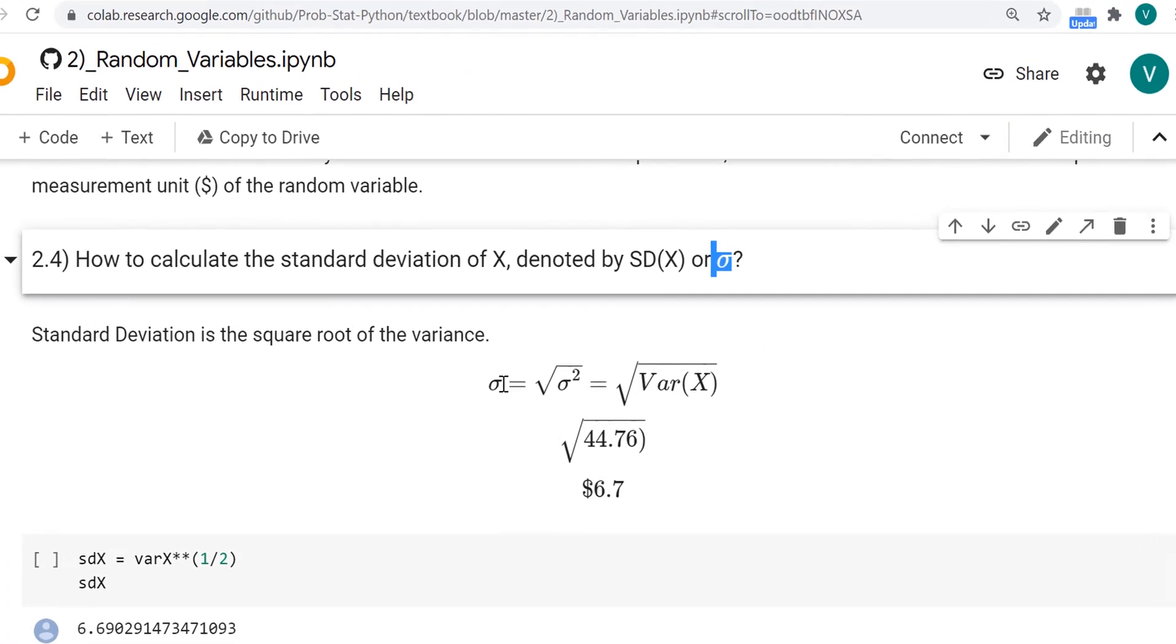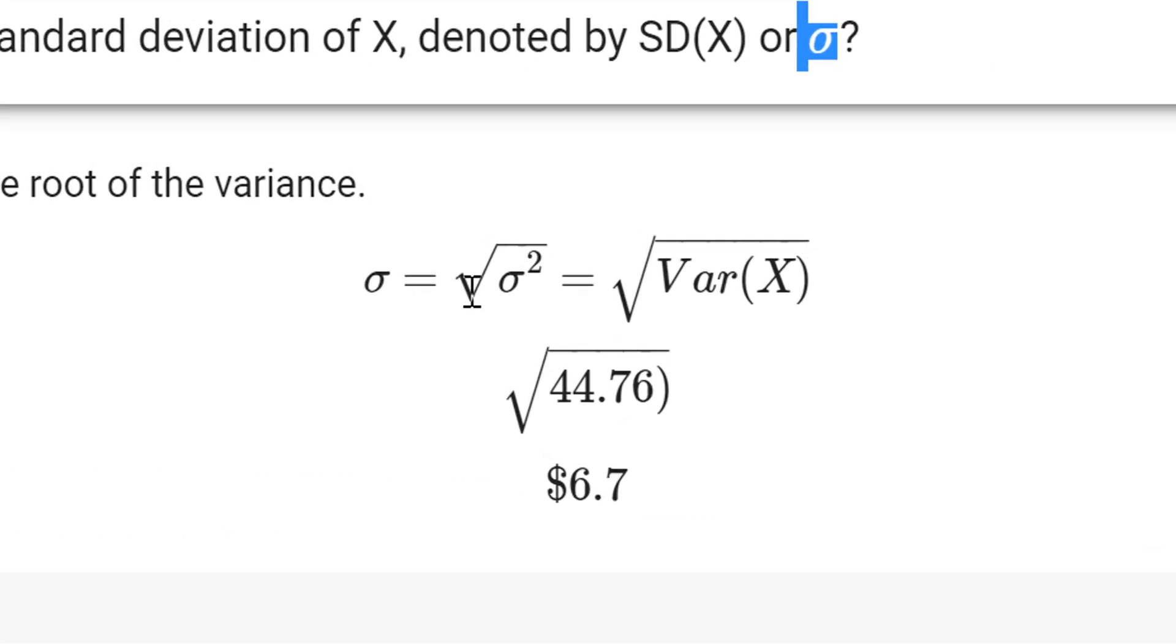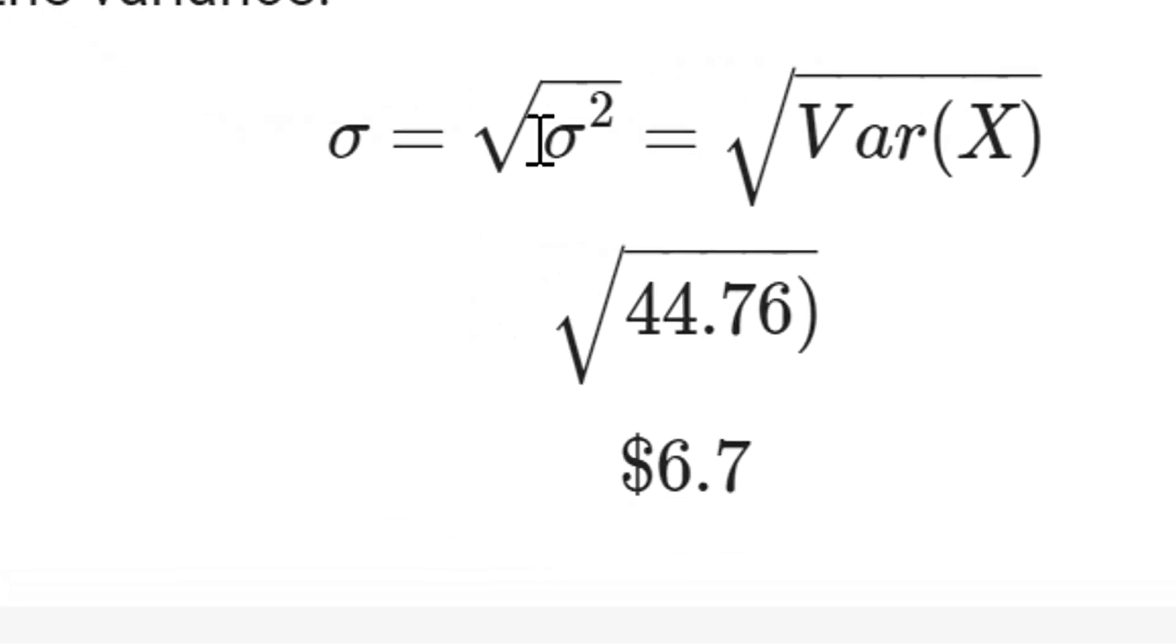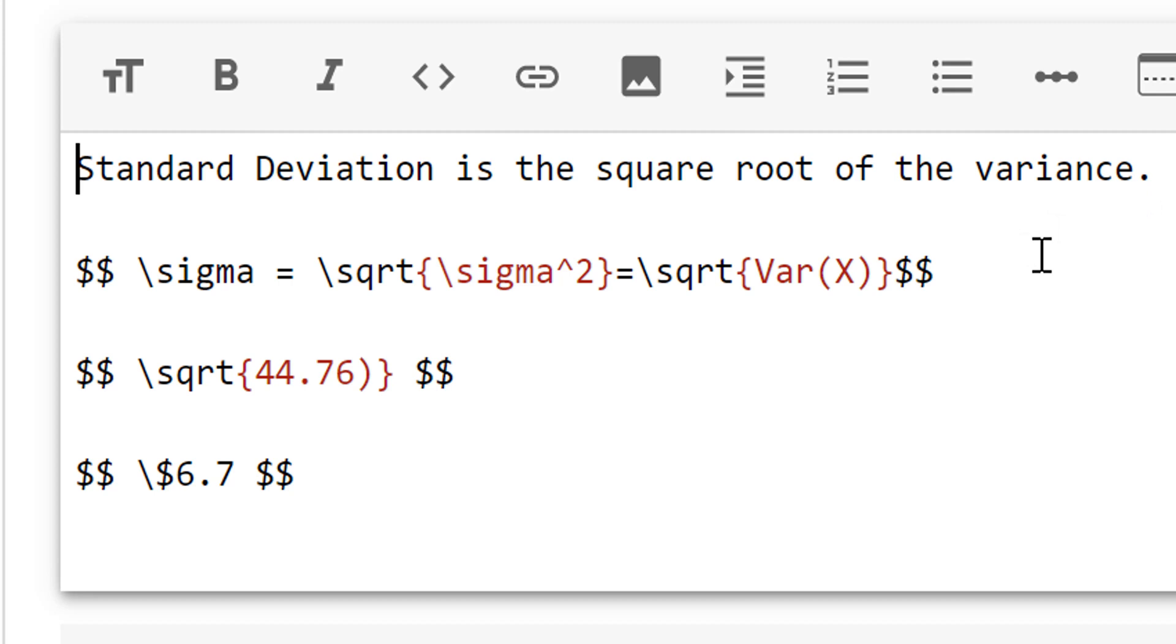Now, let's see this sigma here. See that this is in the center of the text. How to do this? In LaTeX, you use two dollar symbols in the beginning and in the end. See here, the backslash sigma.